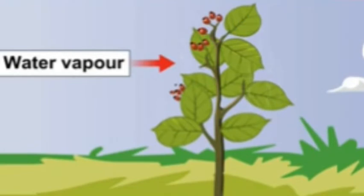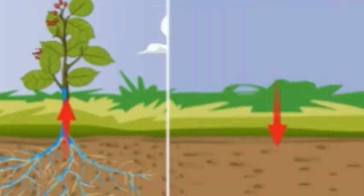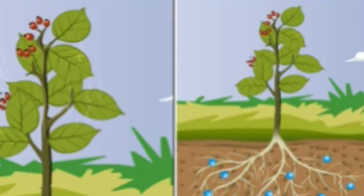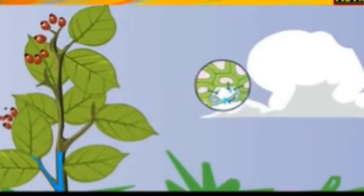Transpiration also helps to cool the plant. Transpiration helps a plant to absorb water against the force of gravity. When the rate of transpiration is more, the rate of absorption of water will be maximum.